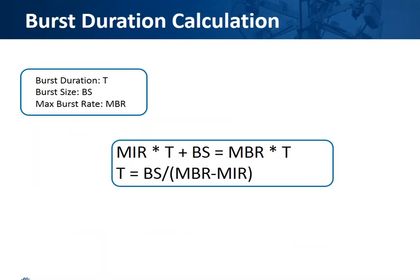This is the formula: MIR times burst duration plus burst size equals maximum burst rate times burst duration, whereas burst duration equals burst size divided by maximum burst rate minus maximum information rate. Sometimes this is not the easiest thing to look at and compute, so we're going to give you a real-world example to make it a little easier.